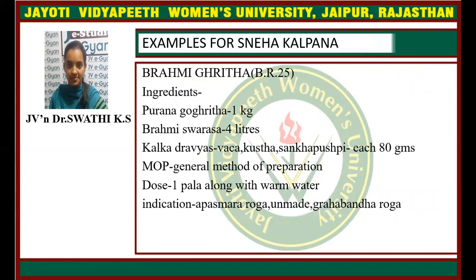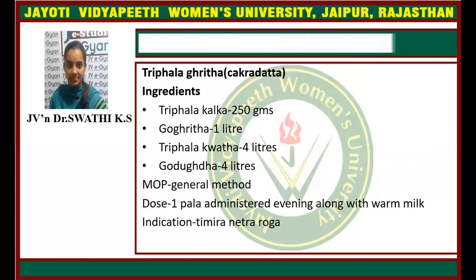An example of Sneha Kalpana is Brahmi Ghrita, referenced from Baisajya Ratnavali. Ingredients: Purana Ghrita 1 kg, Brahmi Swarasa 4 liters, and Kalka Dravyas — Vacha, Kushtha, and Shankhapushpi, each 80 grams. The method of preparation follows the general method mentioned for Sneha Kalpana, and one Pala should be administered with warm water. Indicated in Apasmara Roga, Unmada, and Graha Baddha Roga.